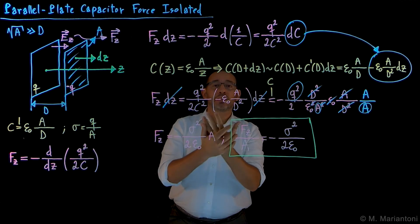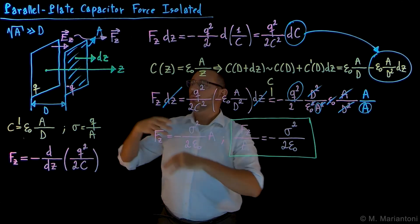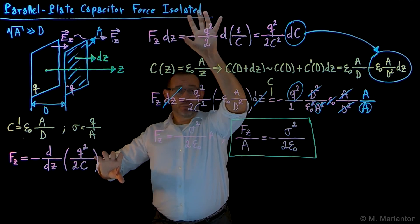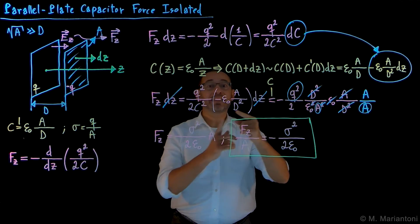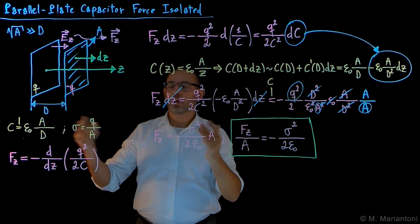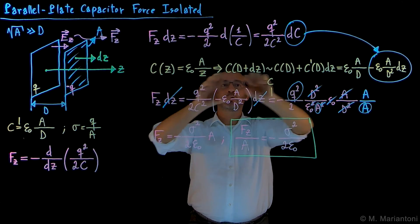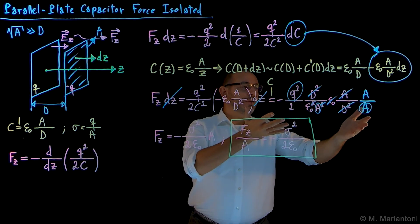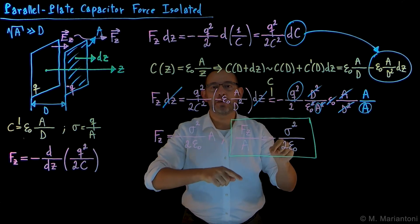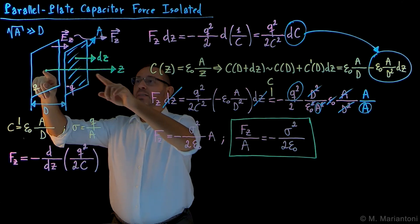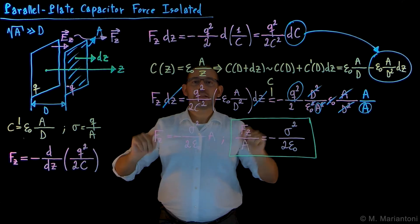To summarize: we used the theory of forces on conductors for a parallel plate capacitor under ideal conditions. Since the system is isolated, we used Q squared over 2C for the energy rather than one half C delta V squared, because Q is constant. C varies with displacement, requiring a Taylor series to find dC. After substitution and simplification, multiplying and dividing by A to express things in terms of sigma, we obtain minus sigma squared over 2 epsilon-naught. In the next video, we consider whether an open system — with a battery always connected — gives the same or a different result.